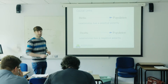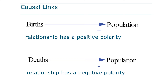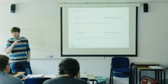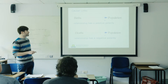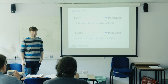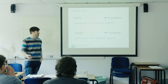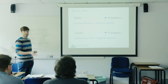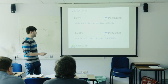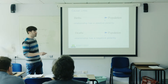Let's start with cause-links. We have two kinds of cause-links: positive ones and negative ones. For example, more births lead to a higher population — if you put a plus there, it's always 'more leads to more,' so the relationship has a positive polarity. A relationship has a negative polarity if more leads to less, or less leads to more. So more deaths lead to a lower population.